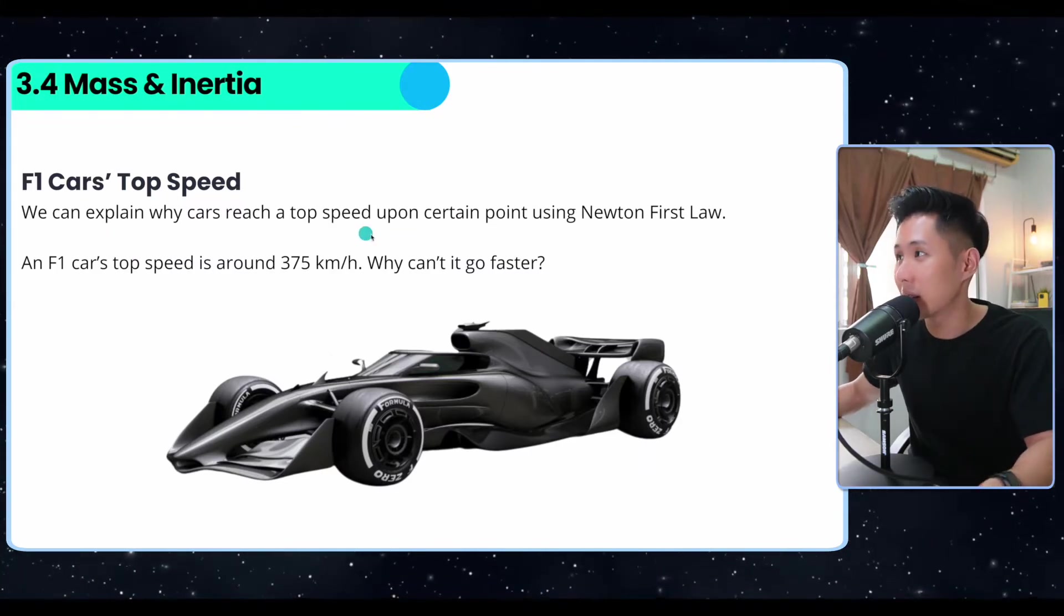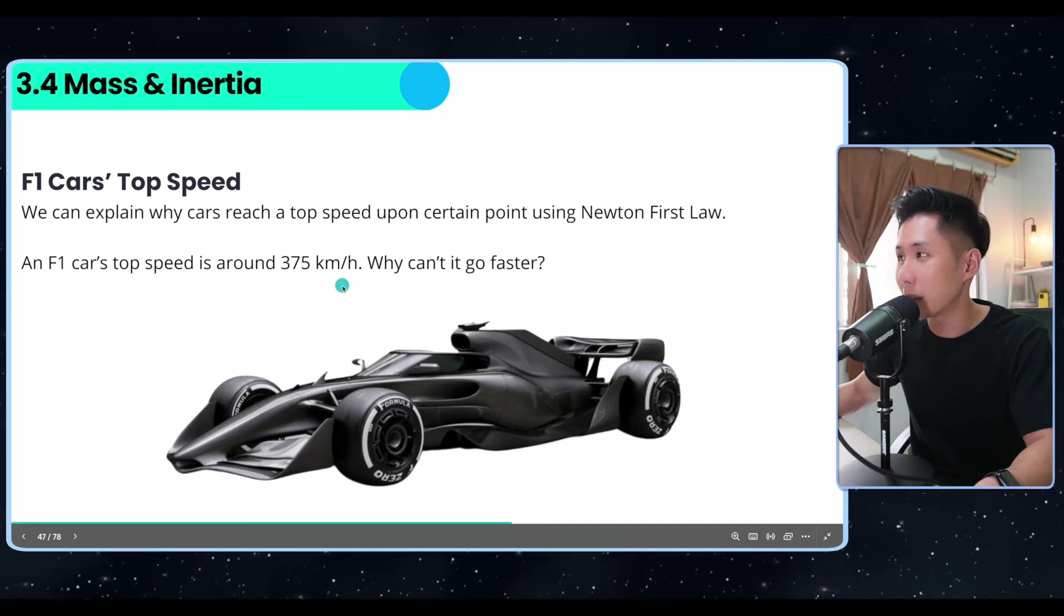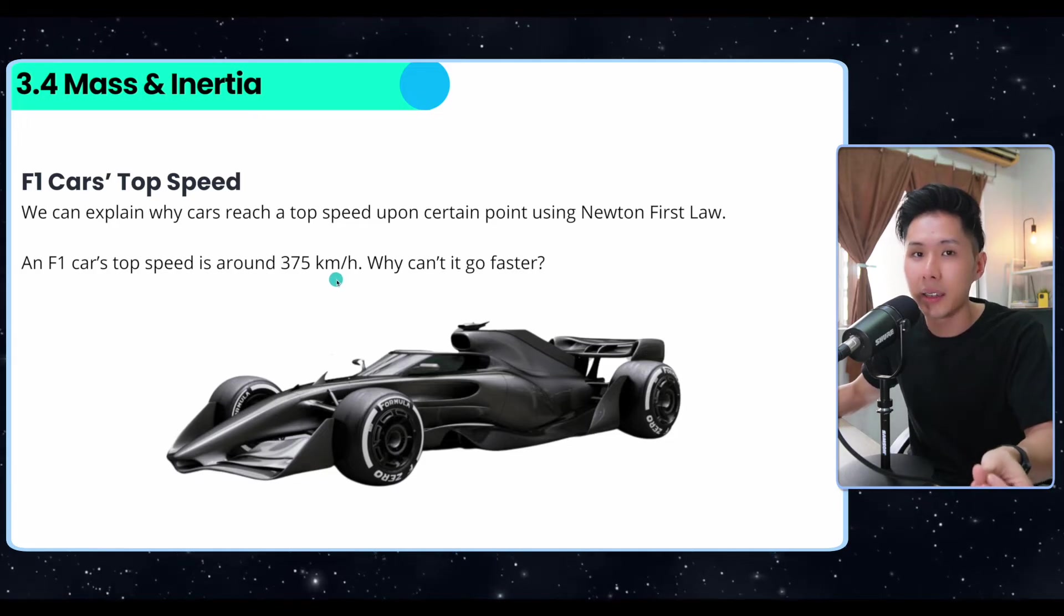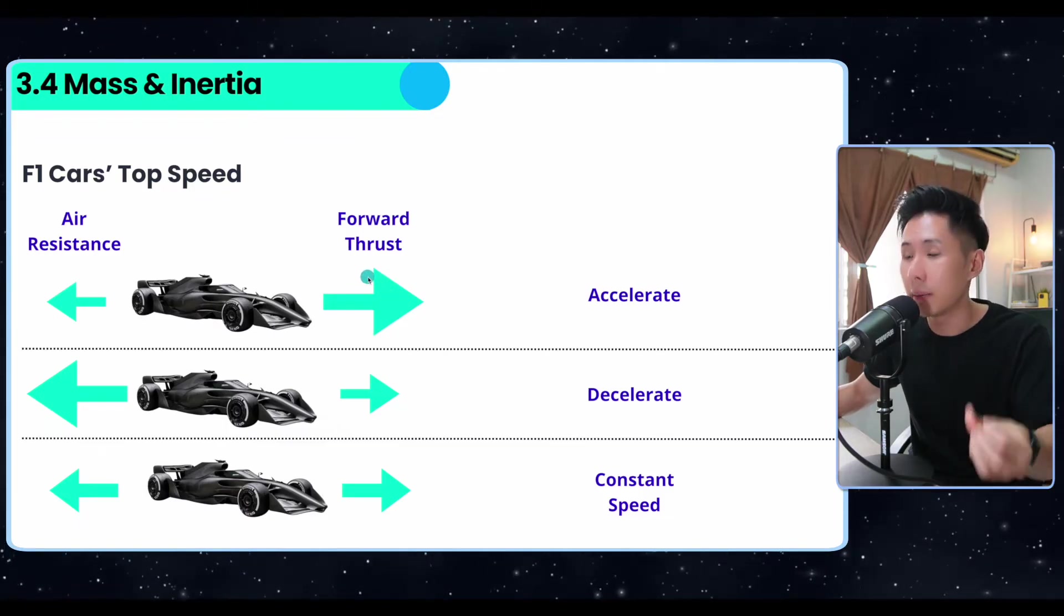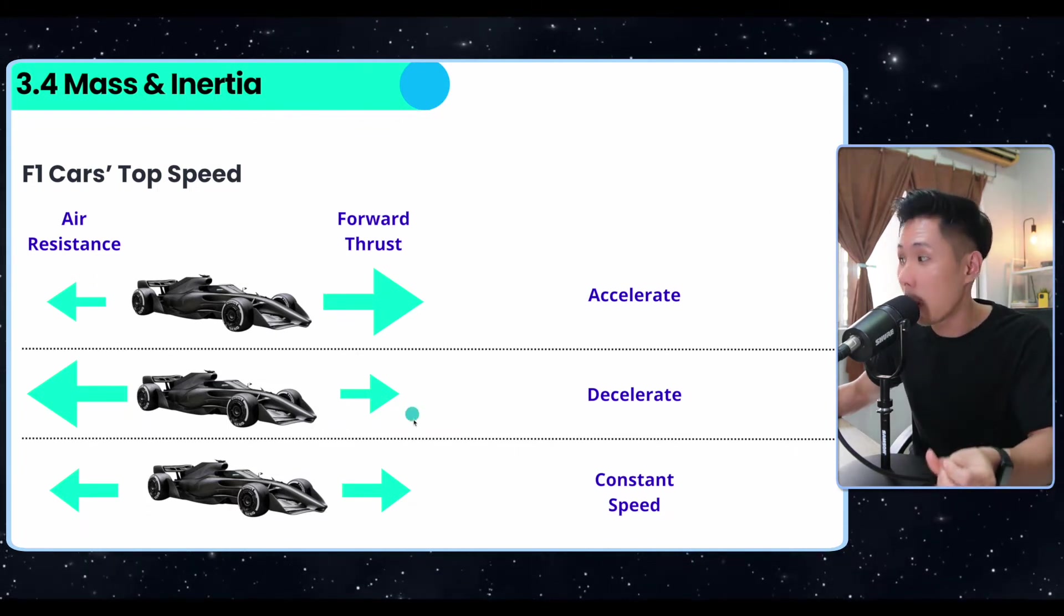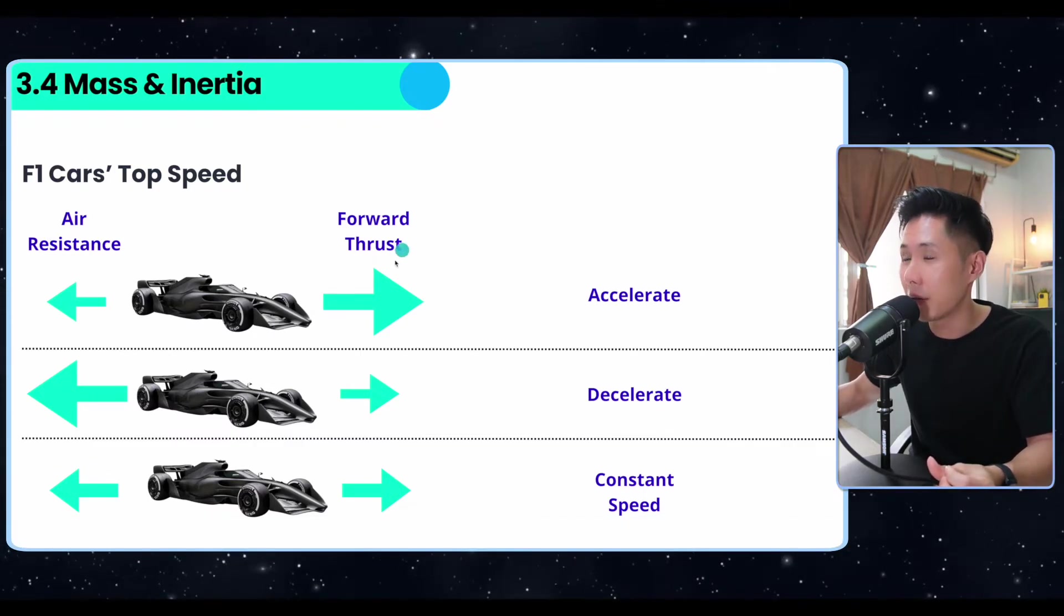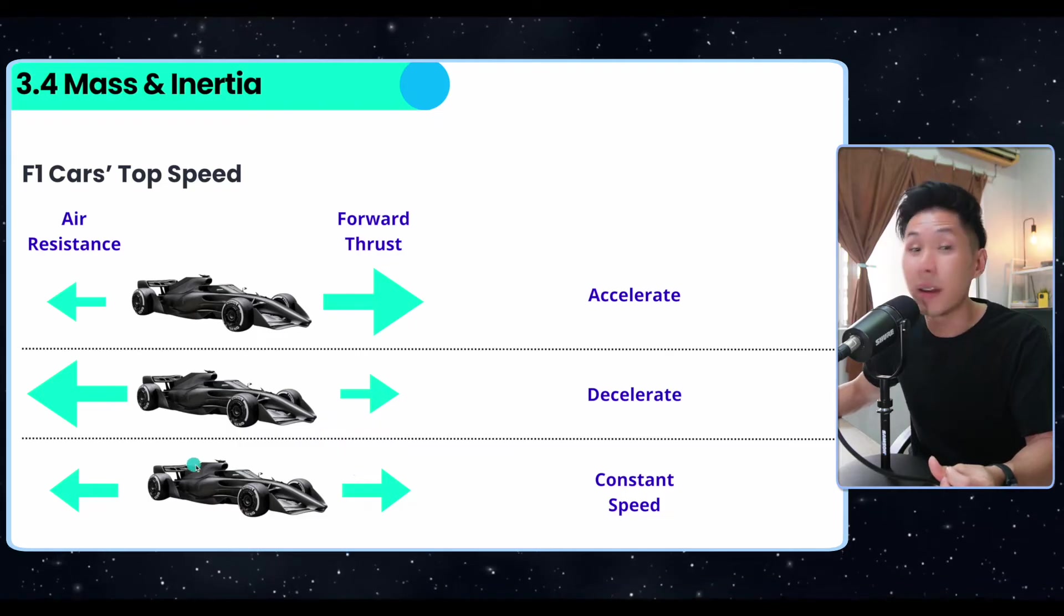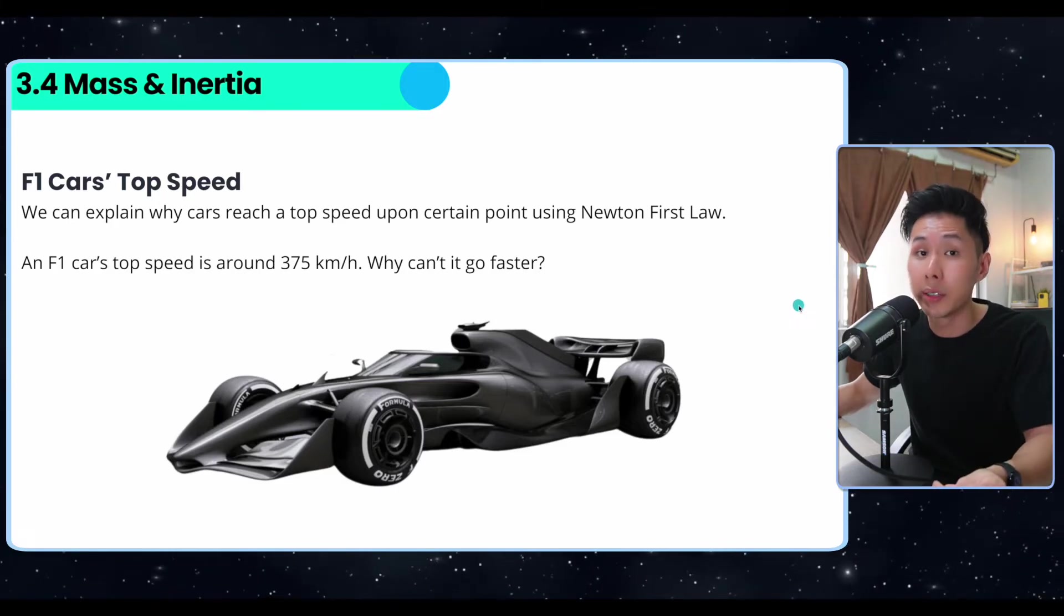Let's look into some examples. We can explain why cars reach a top speed using Newton's first law. This is an F1 car and its top speed. Even if I step on the acceleration pedal, at one point it just can't go any faster. Why is that? Because at one point when the forward thrust is a lot, as you keep accelerating the car, the speed increases. Because of the increase in speed, air resistance will increase to a point where forward thrust equals the air resistance. When your forward thrust is more than air resistance, you accelerate. When air resistance is higher, you decelerate. But when both are the same, that's when you reach constant speed.